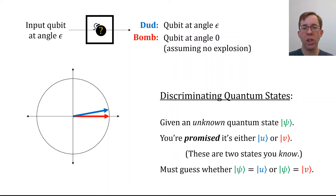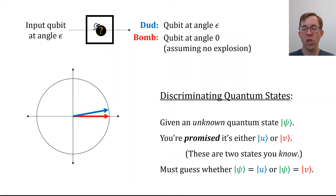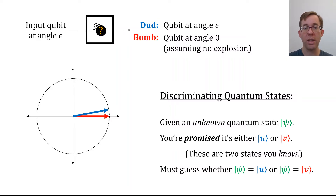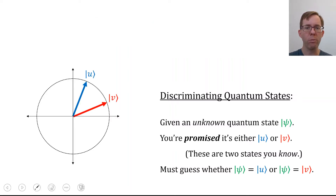This is a general task. Imagine you're given an unknown state psi, and you're promised that psi is either u or v, where u and v are two states that you know the mathematical descriptions of. You just don't know whether psi is u or psi is v. Your task is to take this unknown state psi, do something with it, and eventually try to guess whether it was in state u or state v.